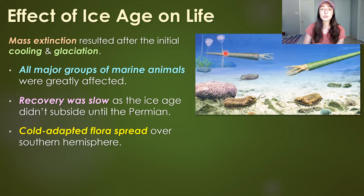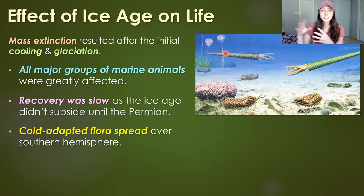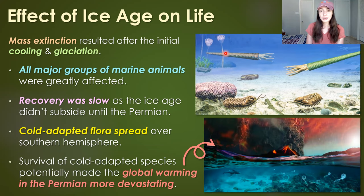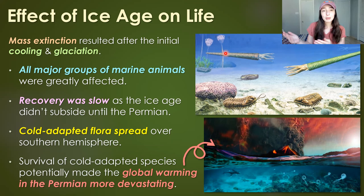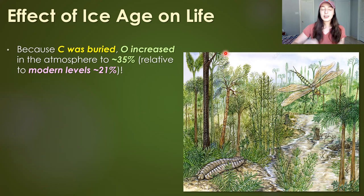Because of the extinction of species that couldn't adapt to cold environments, cold-adapted flora spread over the southern hemisphere — Gondwanaland, which had just collided into Pangea, forming the southern part of Pangea at the time. The survival of cold-adapted species might actually have made the global warming in the Permian, which contributed to the greatest extinction of all time called the Great Dying, even more devastating — cold-adapted species survived the first extinction, but then warming came and they couldn't survive the second one.